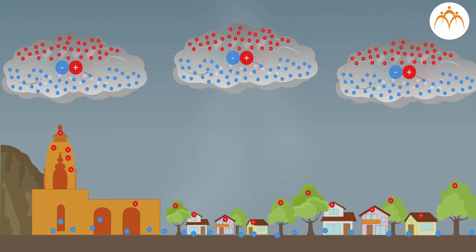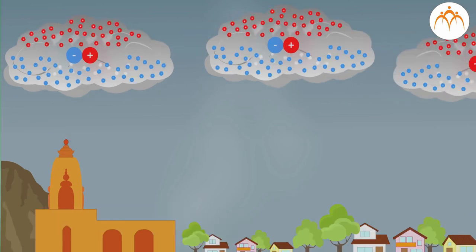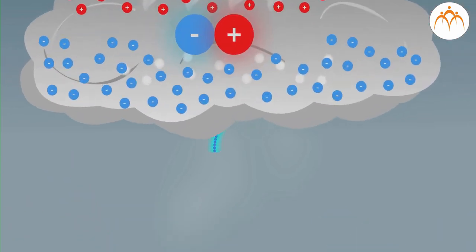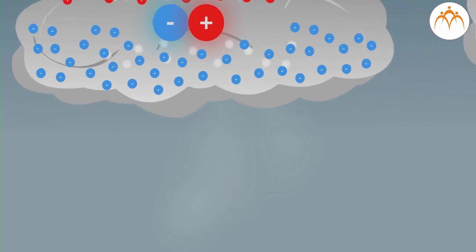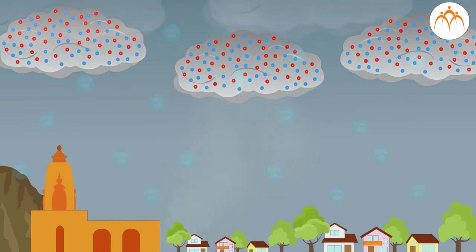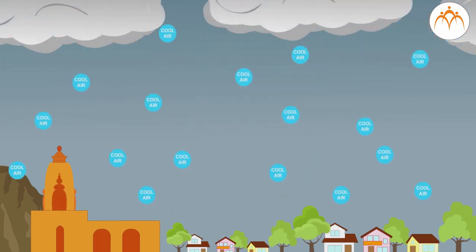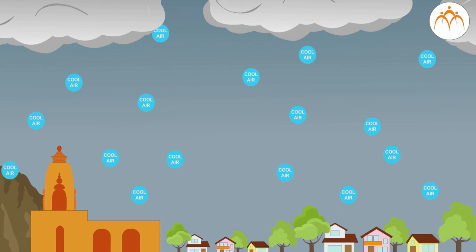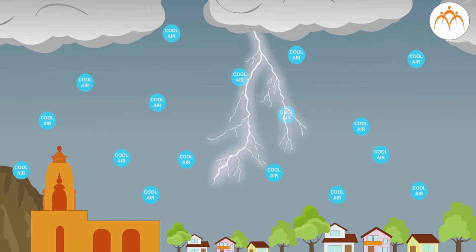Excess negative charges of the cloud are attracted towards positive charges on the ground. But how will these charges flow? Air is a bad conductor of electricity, but if accumulated charges are very large, it becomes a conductor and allows charges to flow. This results in lightning. Heavy heat is produced during the lightning. This happens in a very short amount of time. Heated air expands very fast and pushes the cold air at a very high speed. This results in a sonic boom and we hear loud thunder.